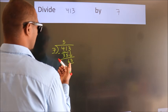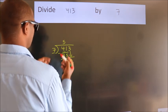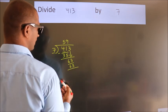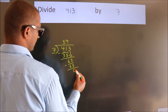When do we get 63? In the 7 table, 7 nines, 63. Now we subtract, we get 0.